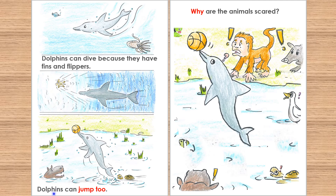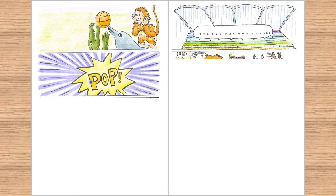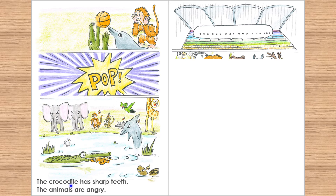Dolphins can jump too. Why are the animals scared? The crocodile has sharp teeth. The animals are angry.